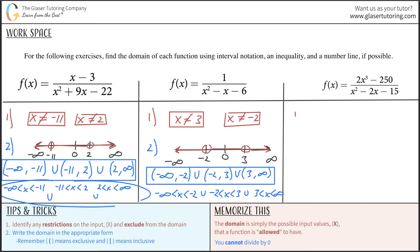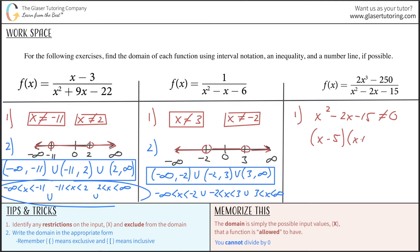For the last question, again there are no restrictions for the numerator — any polynomial in the numerator is fine. The restriction comes from the denominator: x squared minus 2x minus 15 cannot equal zero. Two numbers that multiply to negative 15 and add to negative 2 are negative 5 and positive 3. So x minus 5 cannot equal zero and x plus 3 cannot equal zero, giving us x cannot equal 5 and x cannot equal negative 3.